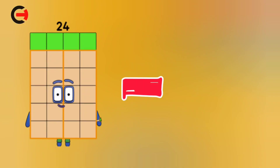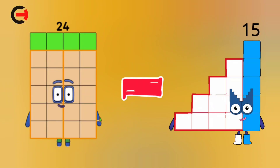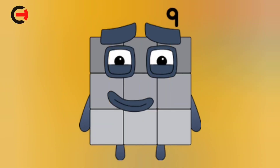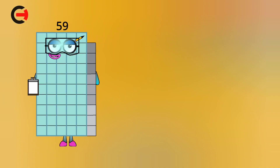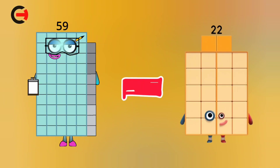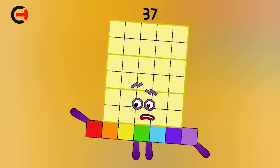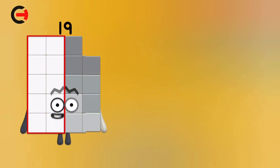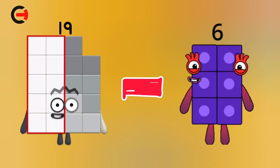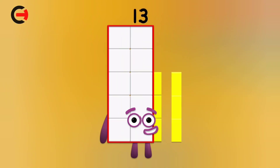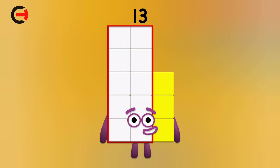24 minus 15 is equal 9. 59 minus 22 is equal 37. 19 minus 6 is equal 13.